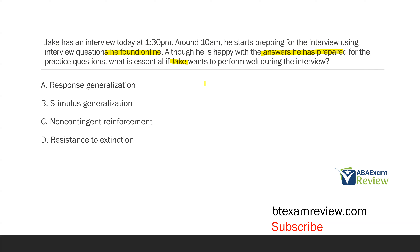We want to see Jake do the same thing. What is essential for Jake? A, response generalization — that is when you have multiple responses in the presence of a single stimulus. We're not too concerned with Jake changing up his responses. If he's happy with the answers he's prepared, then we want Jake to use those answers during the real interview. What we need Jake to do is B, generalize across stimuli — meaning he can go from practice into the real interview and engage with those questions. He can generalize his responses across multiple stimuli.